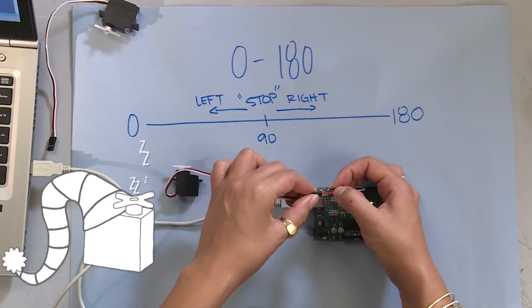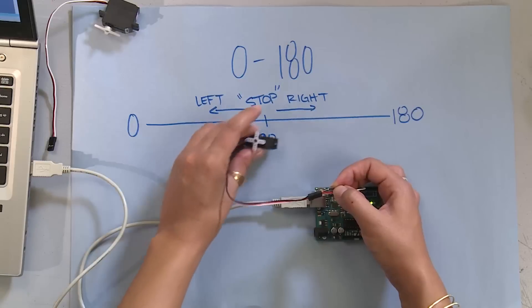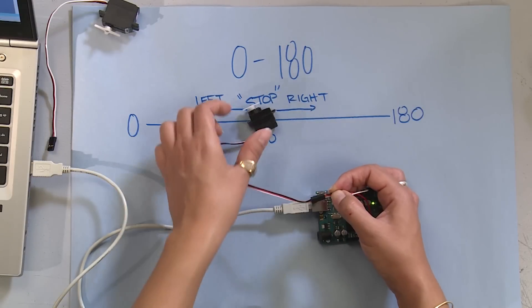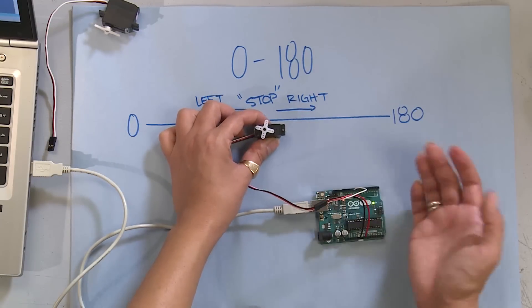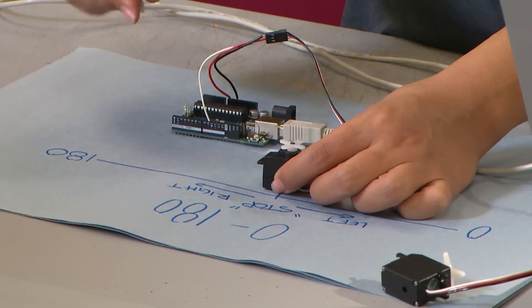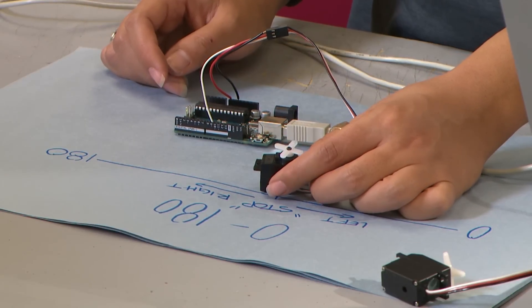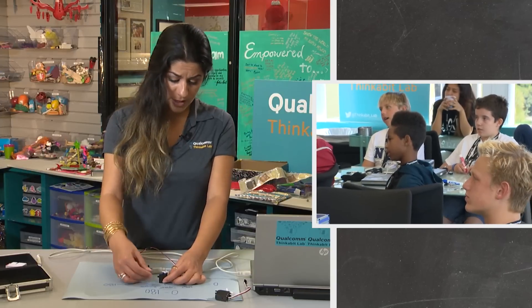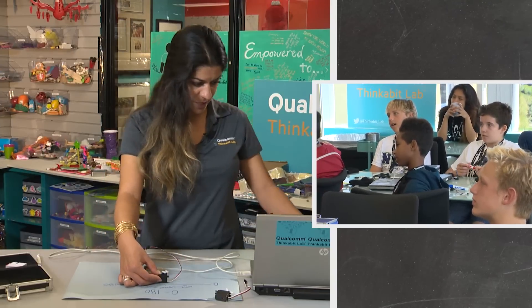A lot of times students will be like, my servo is broken. Watch what happens when I finally plug it in. Went to position zero and it's not moving anymore. You can kind of feel that you can't really move it, but you don't want to do that too much because it's not a very strong servo so you can break it really easily.